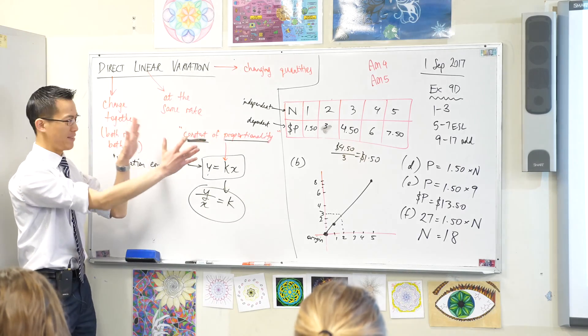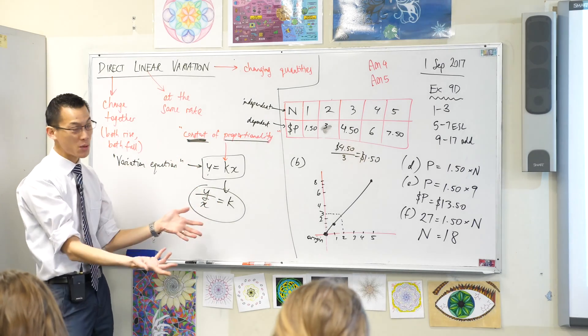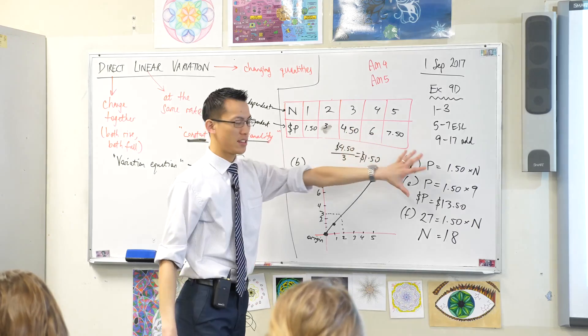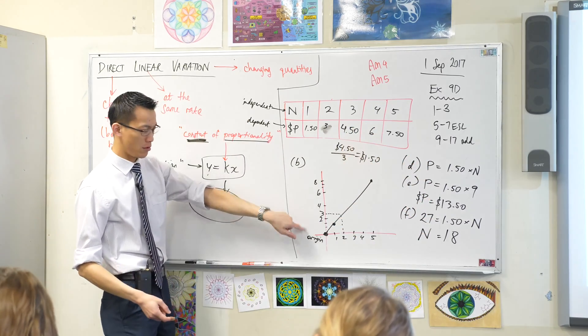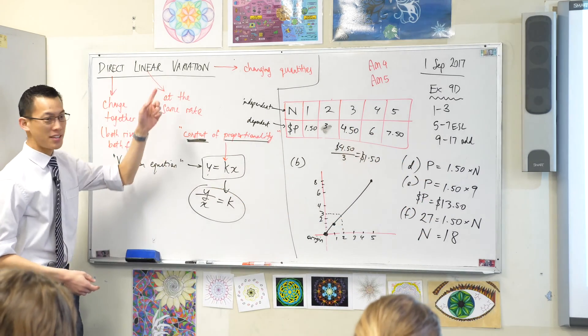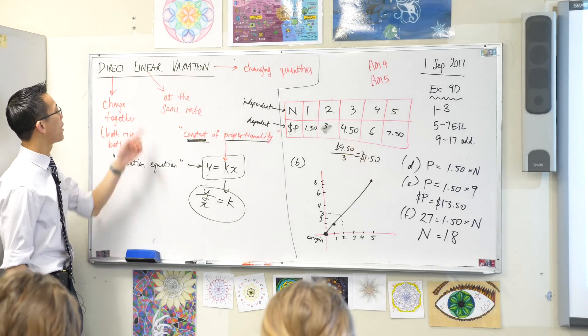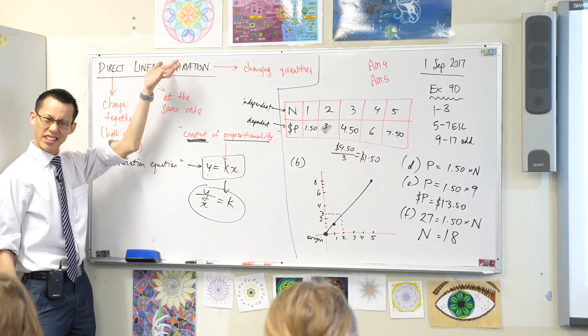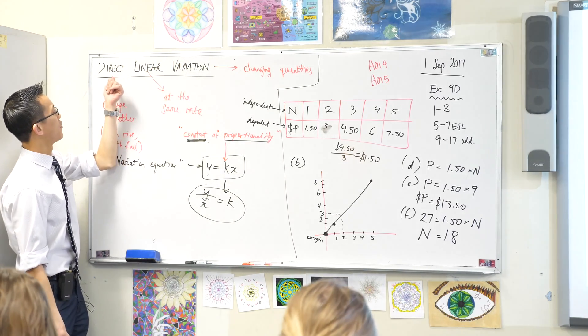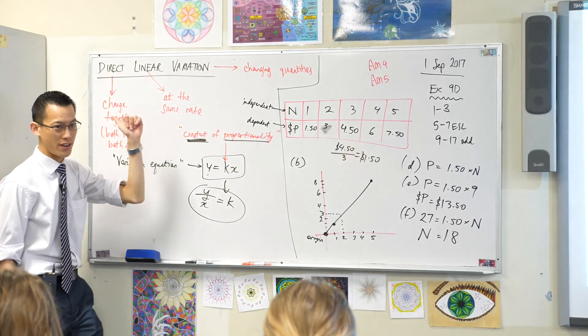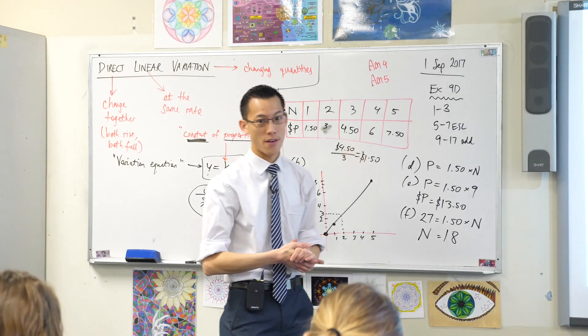Direct linear variation is pretty straightforward. The numbers are really easy, the values are easy, and the shapes are easy too if you were to graph them. So this is just sort of getting us warmed up for when we have direct nonlinear variation, and we have indirect variation, which we will come to in AM5. Okay?